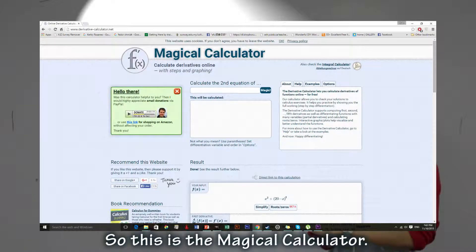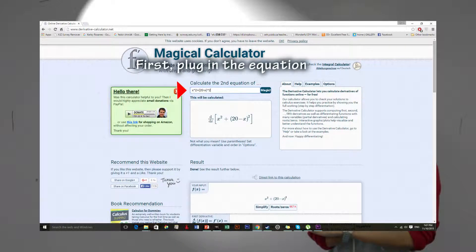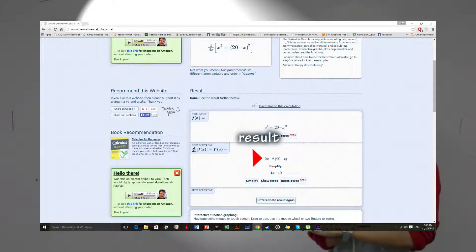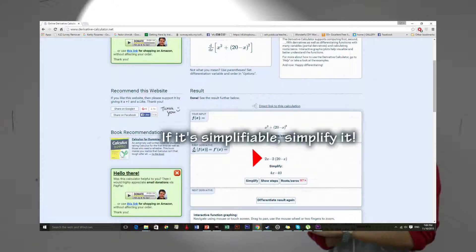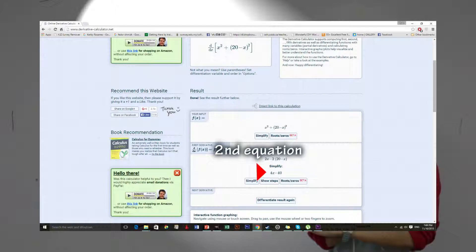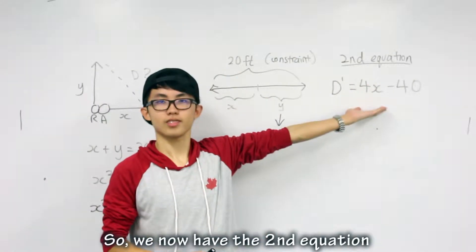So this is the magical calculator. First you plug in the equation that you have found. Then you click the magic button. The first result you get is the second equation. If it's simplifiable, simplify it. After it is simplified, that is the final second equation.